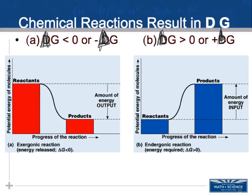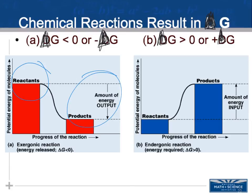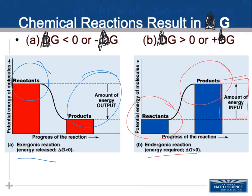Looking at this in graph form: if my delta G is less than zero — a negative change in G — I have an exergonic reaction. On the first graph, my reactants' potential energy decreases, products have less energy than reactants — an exergonic reaction. On the right graph, I have an endergonic reaction: my products absorbed energy, so my change in energy is greater than zero.